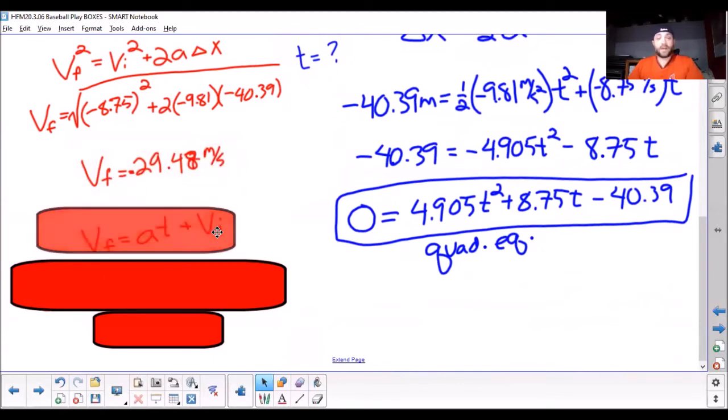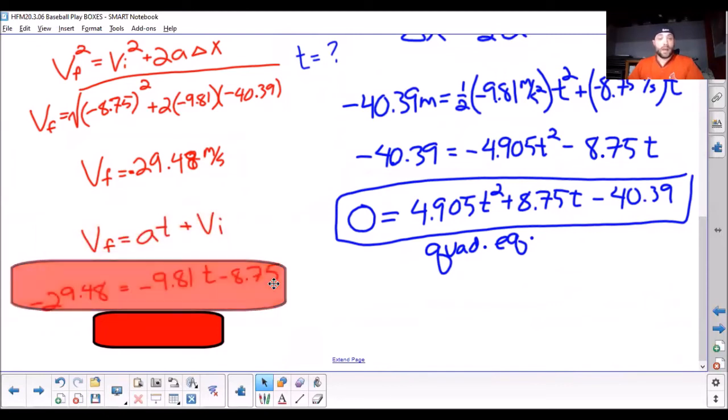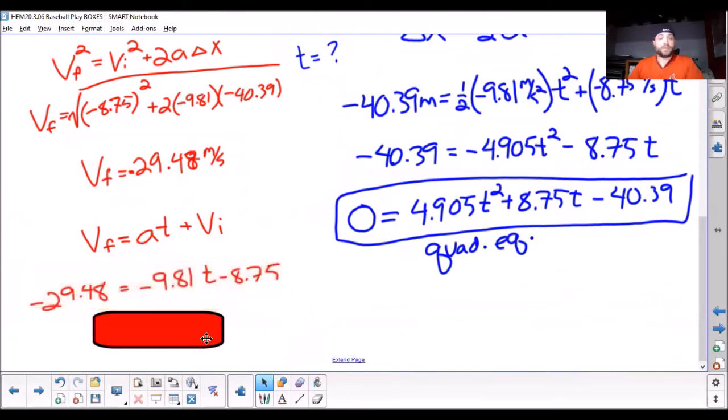Once we know that, then we can simply use velocity final equals acceleration times time plus initial velocity. And we can solve for time to figure out how long Ross has to move. And he actually has 2.1 seconds. So, he actually has a decent amount of time to move.